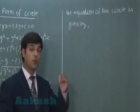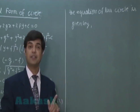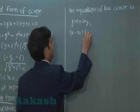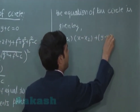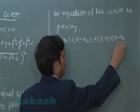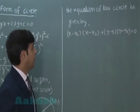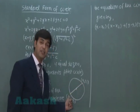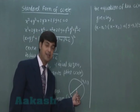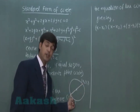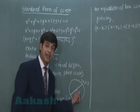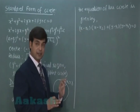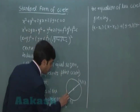The equation is: x minus x1 into x minus x2 plus y minus y1 into y minus y2 is equal to 0. One approach to prove this: since the end points are known, we can find the midpoint as the center, and half the diameter as the radius, then write the equation directly — though simplifying it takes time. A better method is the actual geometric approach.